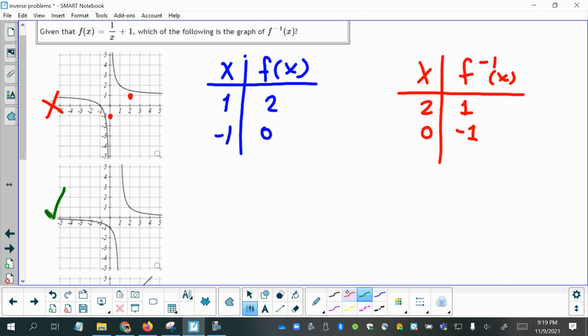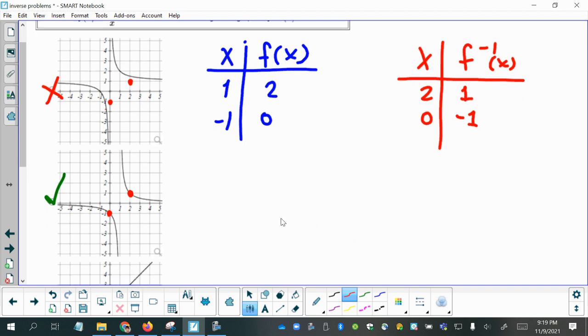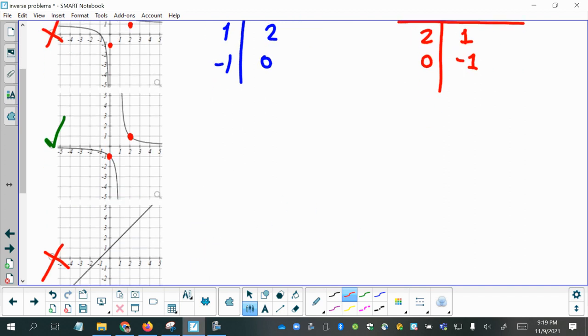So 2, 1 is right here, and you can see it does fall on the graph. And then we have 0, negative 1. So with multiple choice, that made it a lot easier for me to tell which one was the answer.